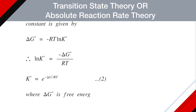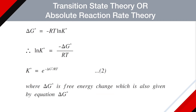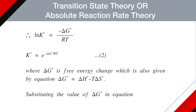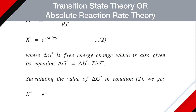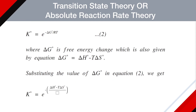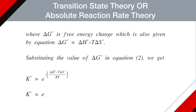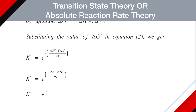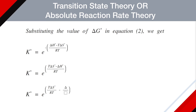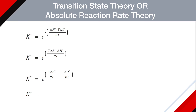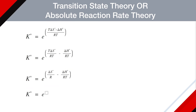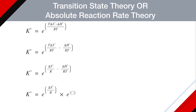In this equation, delta G* is the free energy change, also given by delta G* = delta H* − T delta S*. Substituting the value of delta G* into Equation 2, we get K* = e^(−(delta H* − T delta S*) / RT). Taking the negative sign inside: K* = e^((T delta S* − delta H*) / RT). Expanding this: K* = e^(delta S* / R − delta H* / RT), or equivalently, K* = e^(delta S* / R) × e^(−delta H* / RT). This is Equation 3.